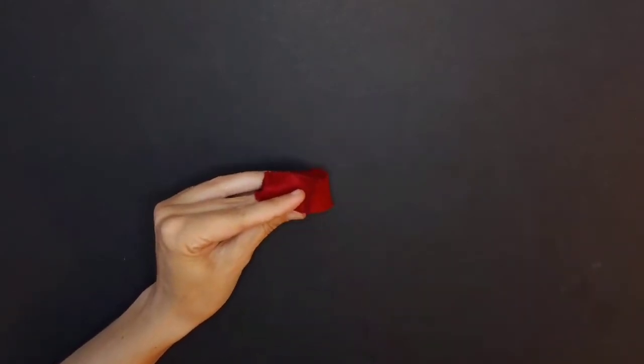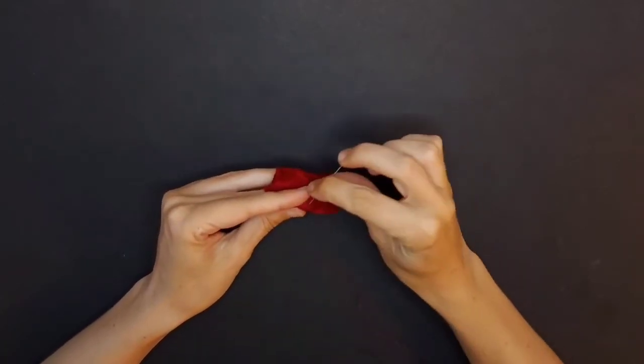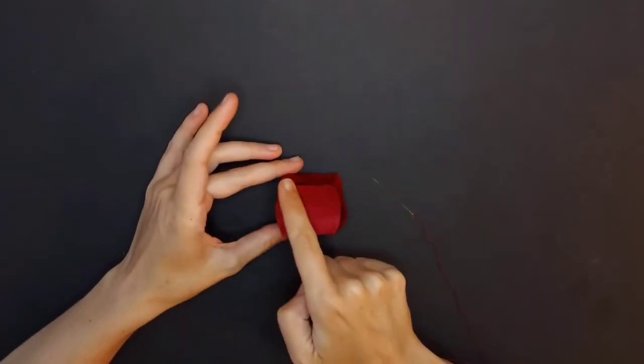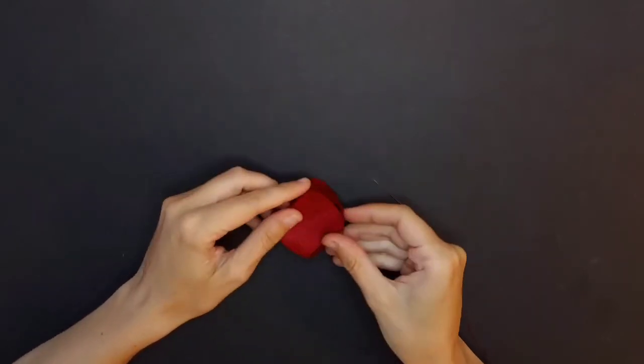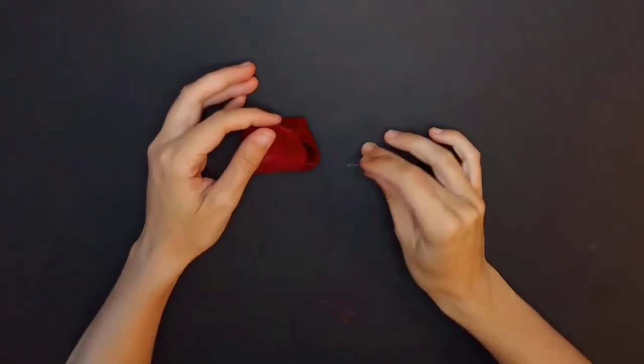You're just gonna want to whip stitch along the edge of three edges and leave the end open for stuffing. I always like doing a little reinforcing stitch right at the end too, especially if I'm gonna stuff, just so I don't pull my stitches too much.